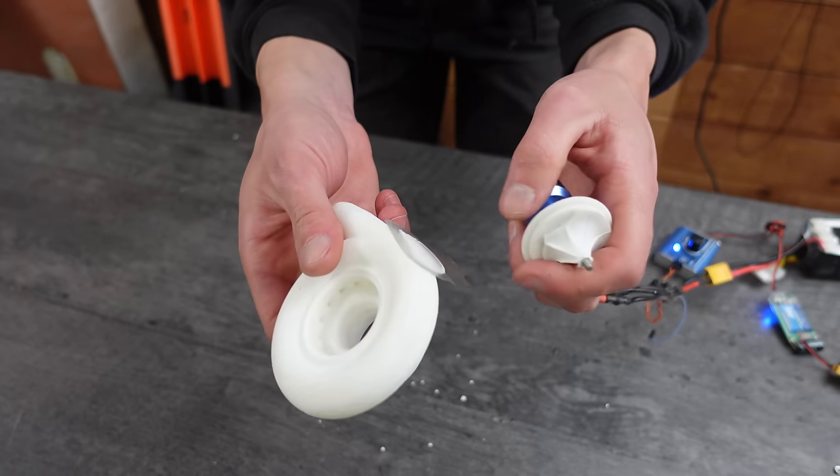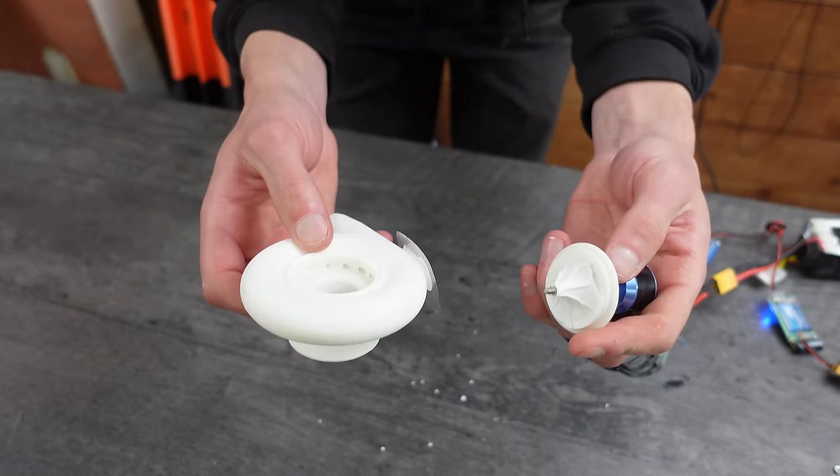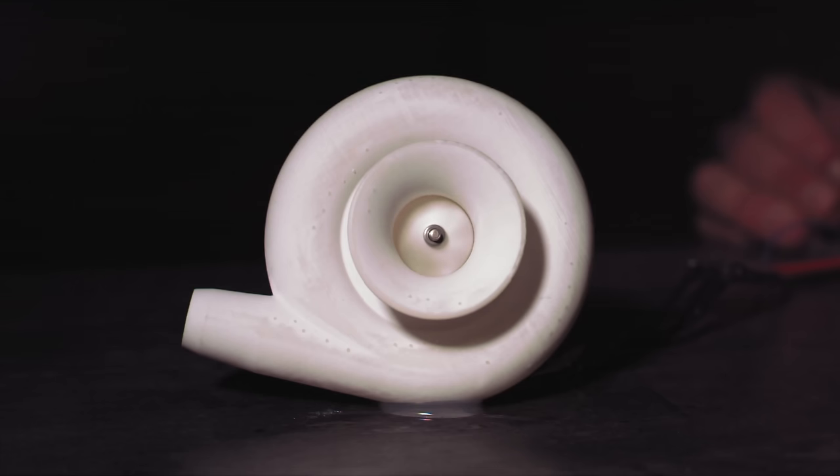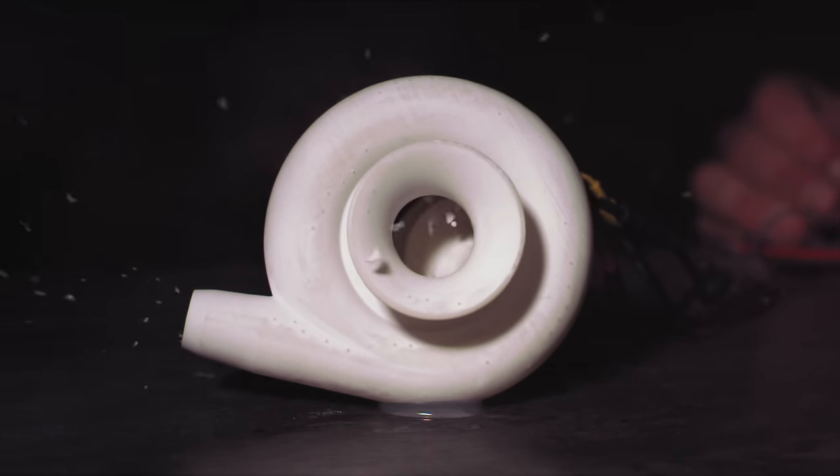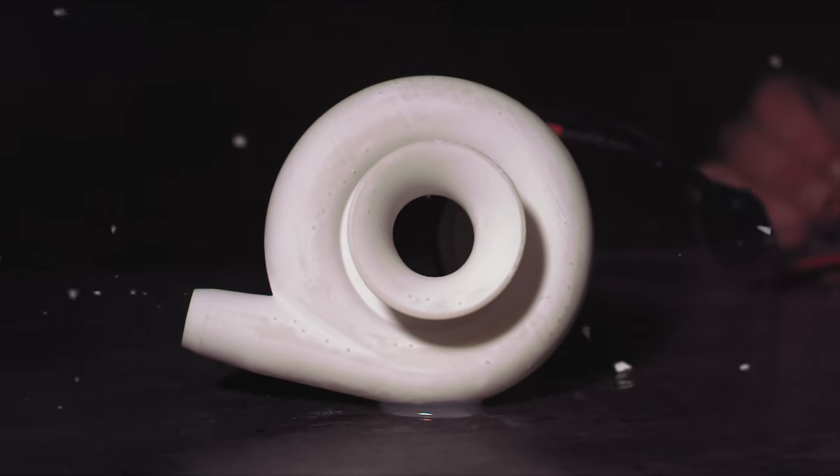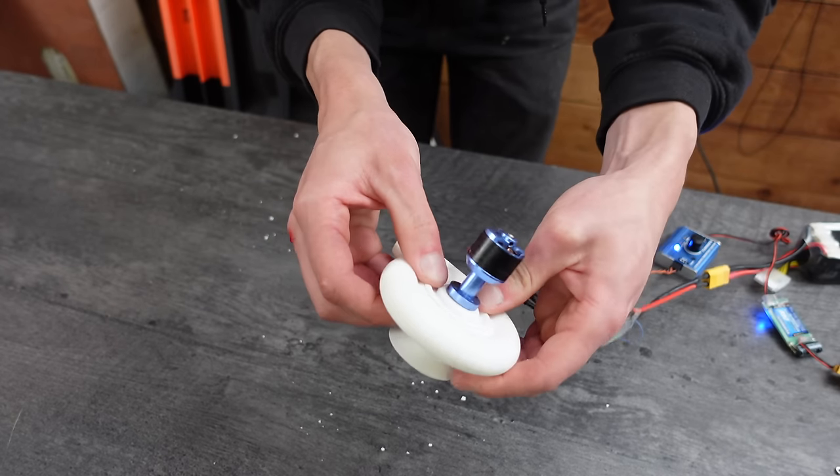Looking at the high-speed footage, it's obvious that this thing didn't fail because the impeller broke apart due to centrifugal force, it failed because this motor mount part here started falling out. And then, of course, once the impeller contacted the side of the housing, it just exploded. So I need to attach this in there better. It was just friction fit. Then, I reprinted everything.